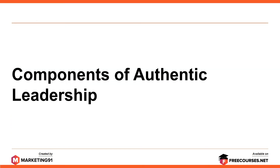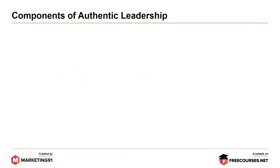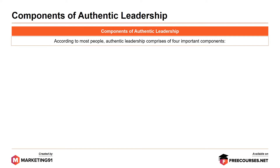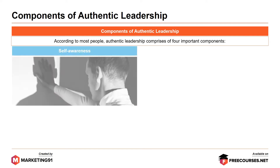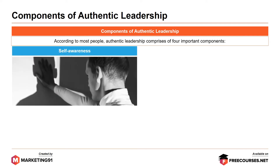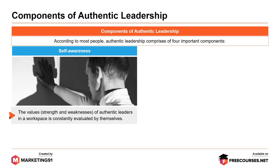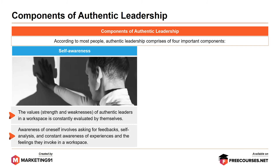Moving on to the components of authentic leadership. According to most people, authentic leadership comprises four important components. The first is self-awareness. The values, strengths and weaknesses of authentic leaders in a workspace are constantly evaluated by themselves. Awareness of oneself involves asking for feedback, self-analysis and constant awareness of experiences and the feelings they invoke in a workspace.